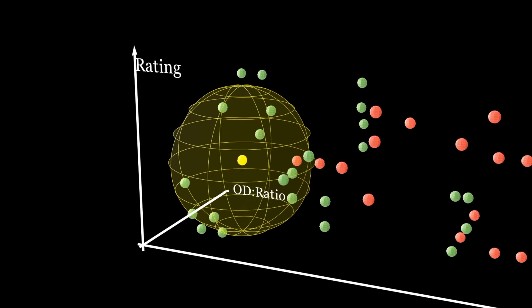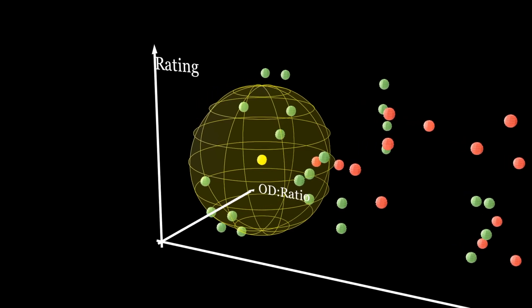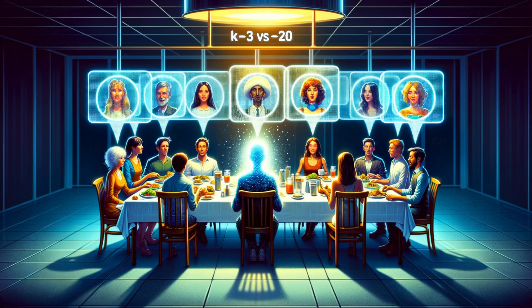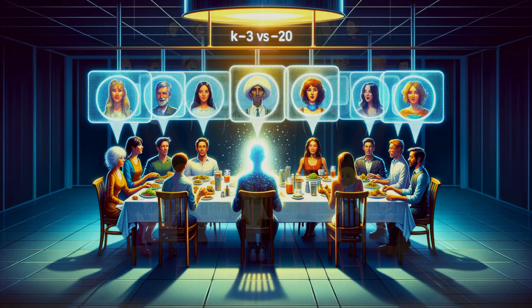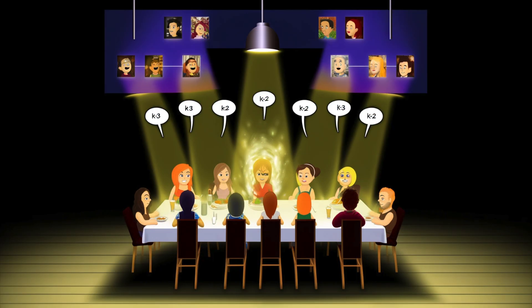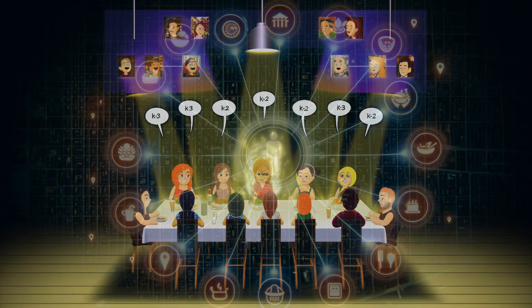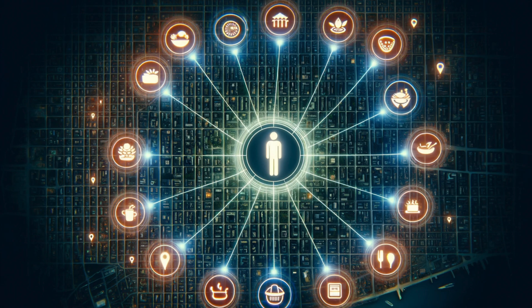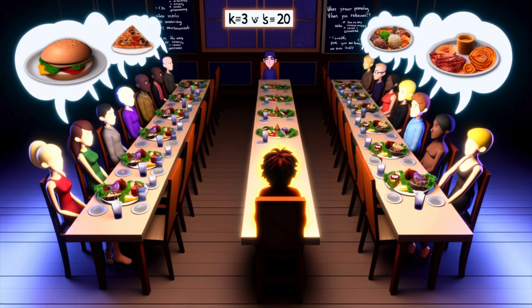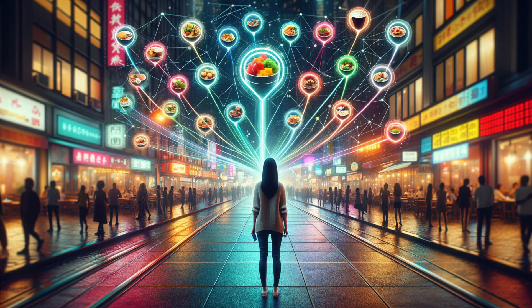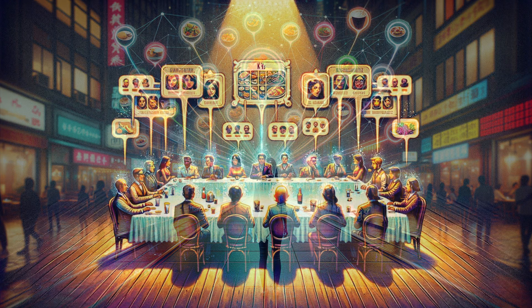Imagine you move to a new city and want to know what the best restaurants are. You could survey your K closest friends and choose the eatery that the majority of them support. If K equals 3, you might be swayed by one very close friend with quirky tastes, but if K equals 20, you'll get a more representative sample of the local preferences.